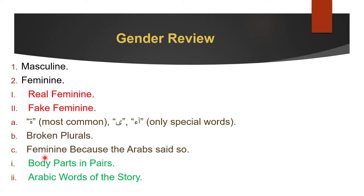Next we come to feminine because the Arabs said so. Here we divide it into two parts. First: body parts in pairs, like eyes, hands, feet — all body parts in pairs are feminine. Or the random words from the story — I hope you learnt the story by now. With that we have completed the review and will be applying all this knowledge in the next slide.